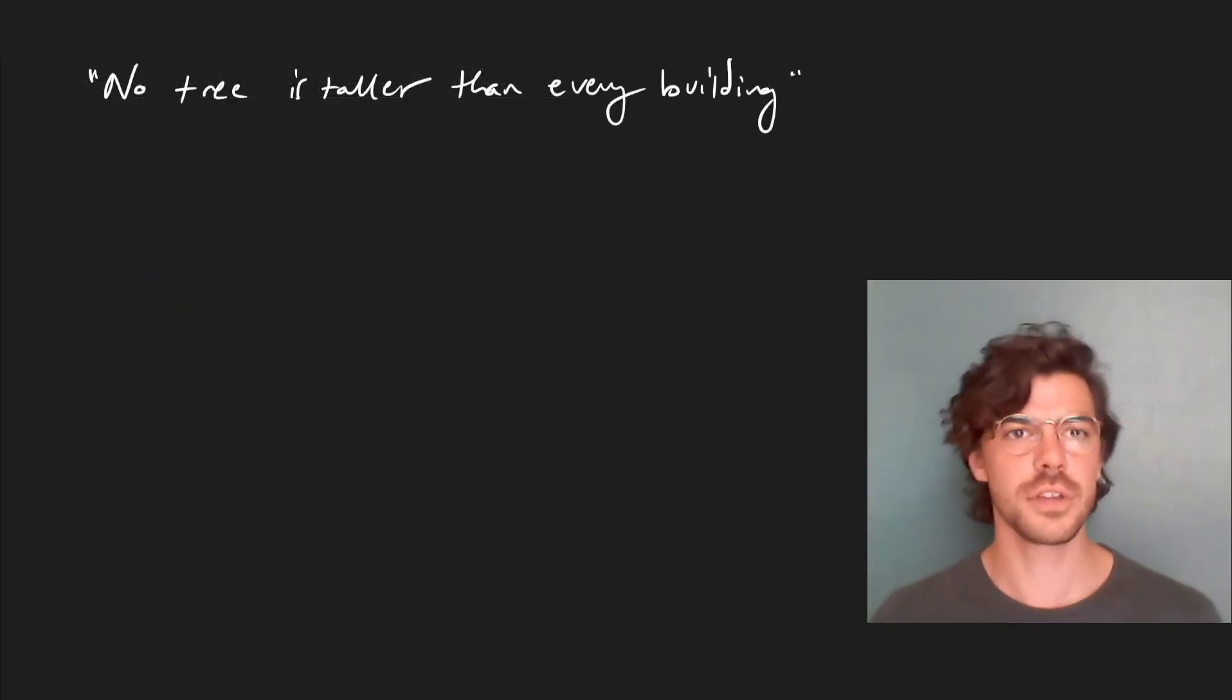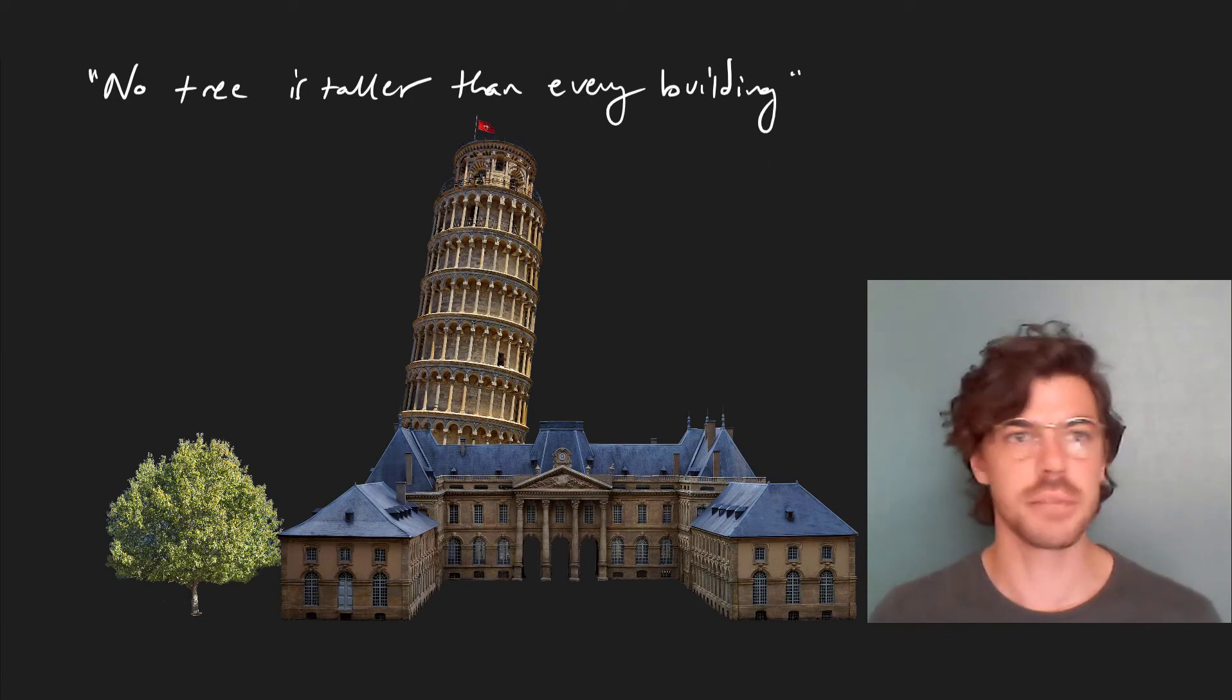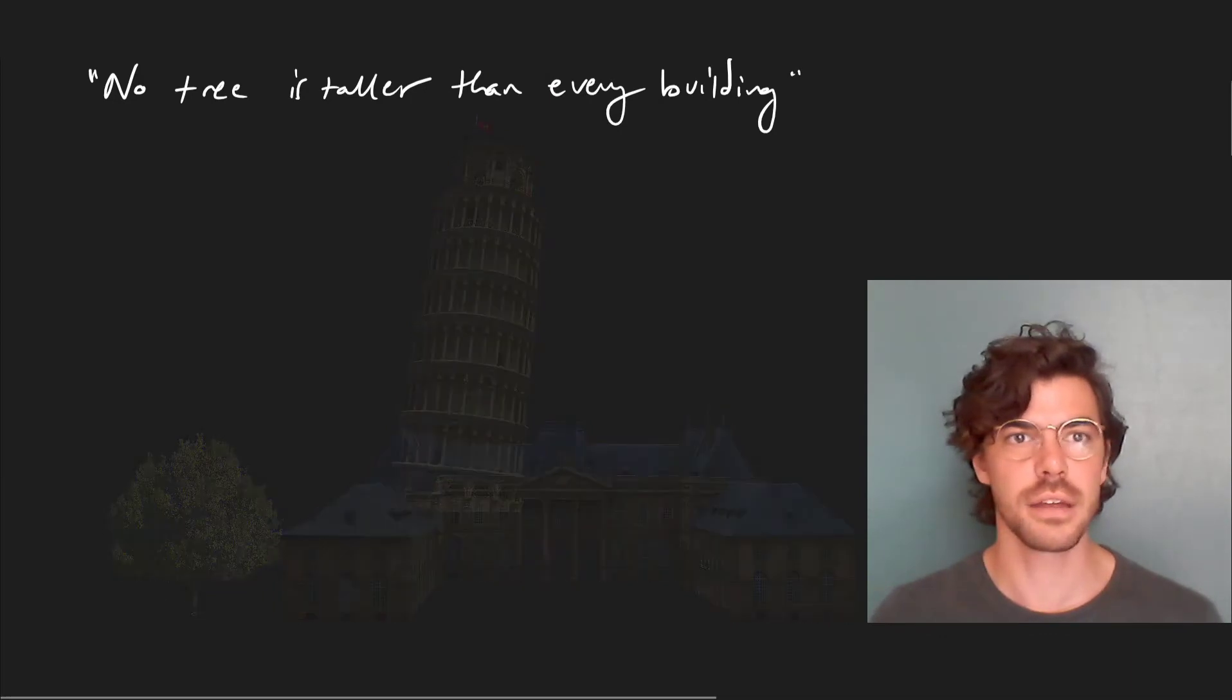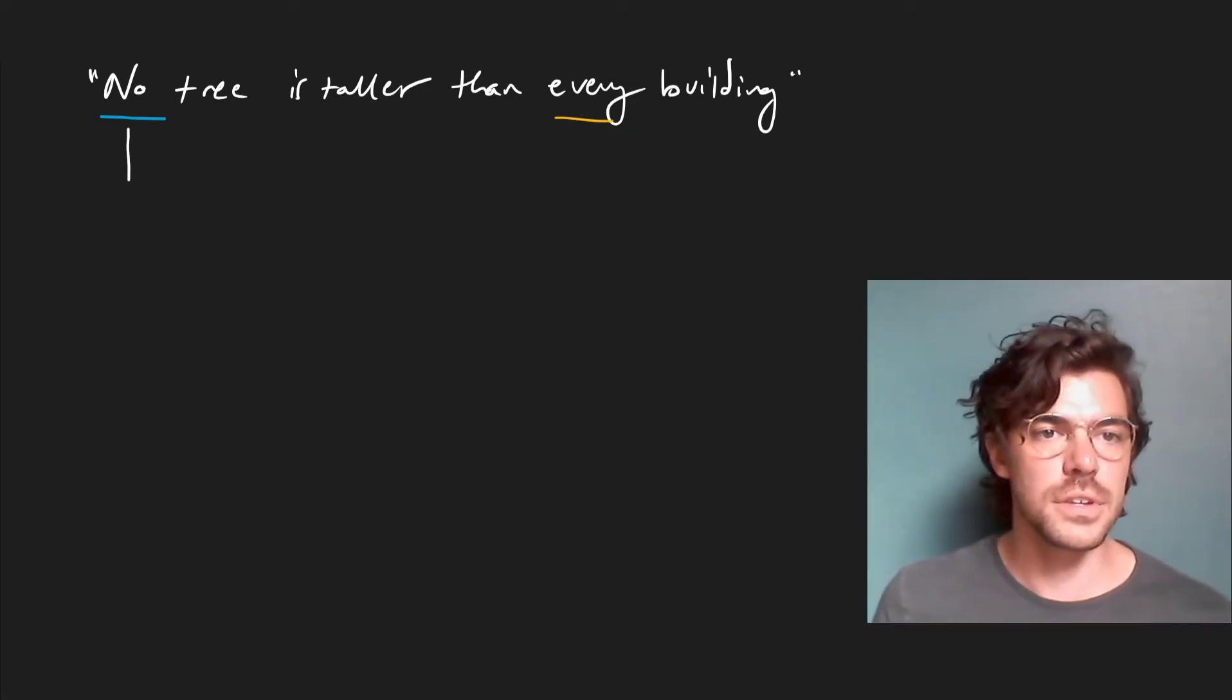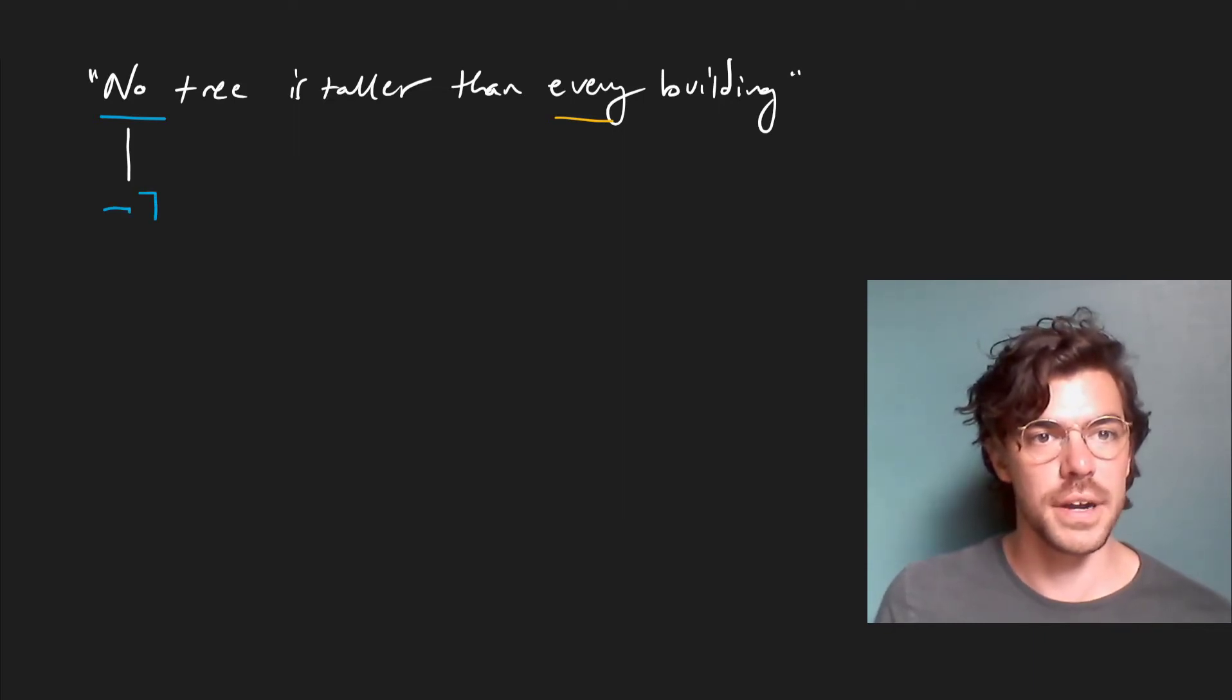Take the sentence 'no tree is taller than every building.' Here we can proceed in much the same way. Clearly 'no' is a quantificational term, and clearly so is 'every.' Now we know that this 'no' is equivalent with a negation sign plus a quantifier—not some, or there doesn't exist any.